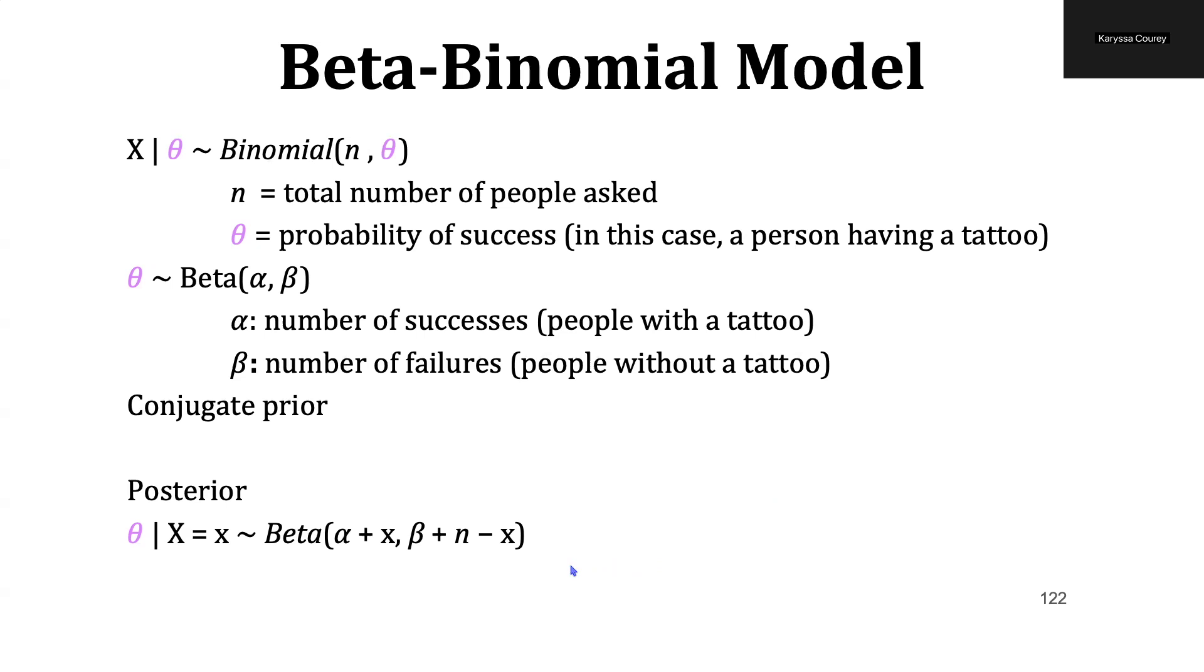And specifically, we know we can solve for this distribution quite easily. I won't show the proof here, but ultimately, our posterior hyperparameters are equal to alpha plus x, where x is the number of people we observed with the tattoo, comma, beta plus n, our total number of people that we asked, minus x.